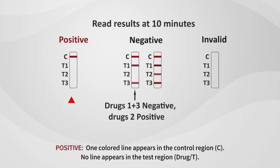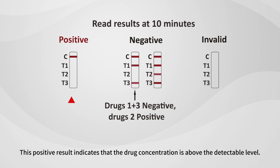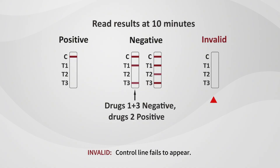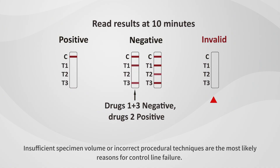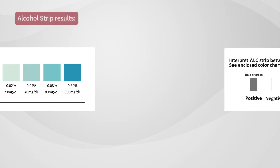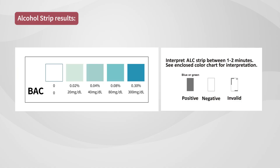For a positive result, one colored line appears in the control region C. No line appears in the test region T. This positive result indicates that the drug concentration is above the detectable level. For an invalid result, the control line fails to appear. Insufficient specimen volume or incorrect procedural techniques are the most likely reasons for control line failure.